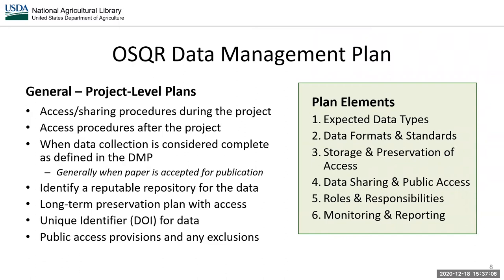The requirements laid out in the OSCAR project plan call for general DMPs written at the project level. It's important to lay out the access and sharing procedures between team members during the course of the project and indicate access procedures after the project is complete. Define when data collection is considered complete — in most cases, this will be when the paper was accepted for publication. Identify a reputable repository for the data; use domain-specific repositories for the best support and management of your data, otherwise use the Ag Data Commons, USDA's generalist ag repository. Consider how to maintain public access to your data in the long term, and obtain unique identifiers like a DOI for your data sets.